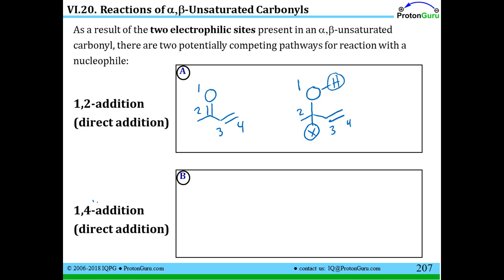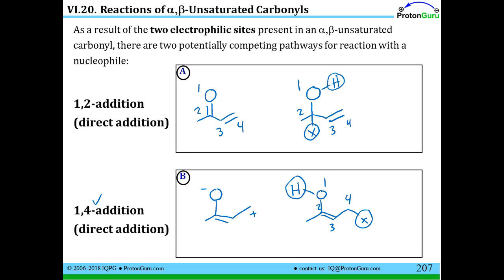If we have 1,4 addition, we draw our resonance structure with plus and minus, add the H to the oxygen, and add our X group to the carbon at position 4 — numbering 1, 2, 3, 4. We're only numbering the atoms that are in pi bonds, not any other chains coming off these sites — only the atoms that comprise the pi-conjugated system. So we've added H and X to atoms 1 and 4.